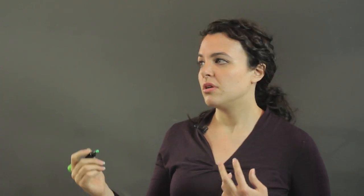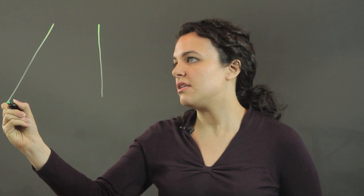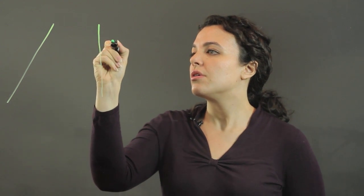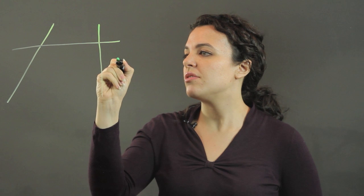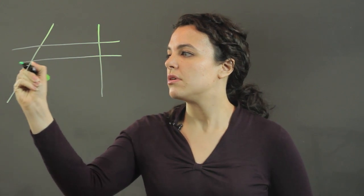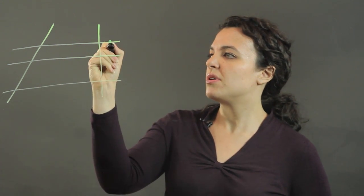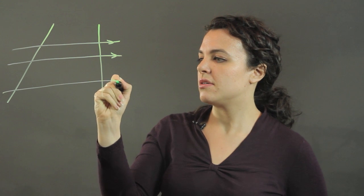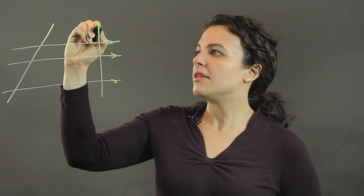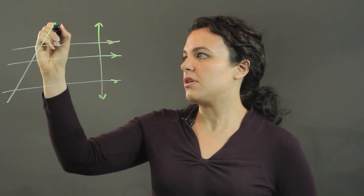What it basically says is, if we've got two transversals, two lines really, that are intersected by three or more parallel lines. So these would be our three parallel lines, and these are our transversals here.